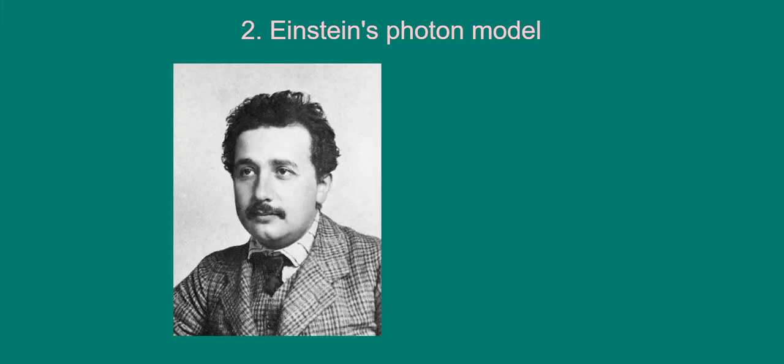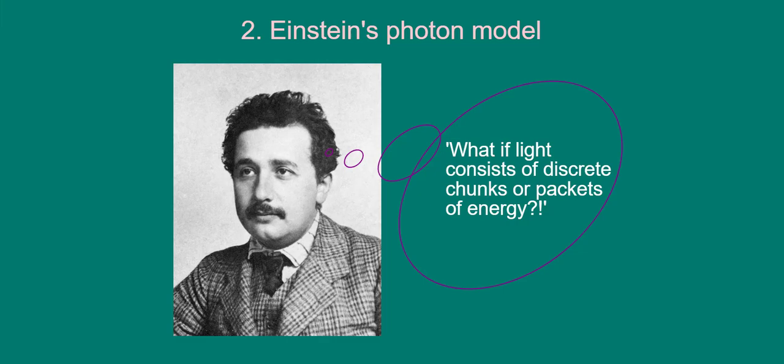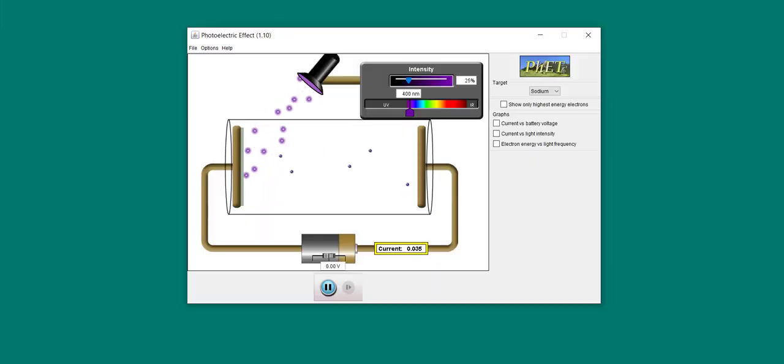In 1905, Einstein proposed a revolutionary hypothesis to explain the experimental data, for which he won a Nobel Prize in 1921. He suggested that light, rather than being a wave, consists of discrete chunks or packets of energy, now called photons. In other words, photons are particle-like entities carrying discrete amounts of energy. The PhET simulation that we're seeing here should help you form a mental model of radiation being comprised of photons.